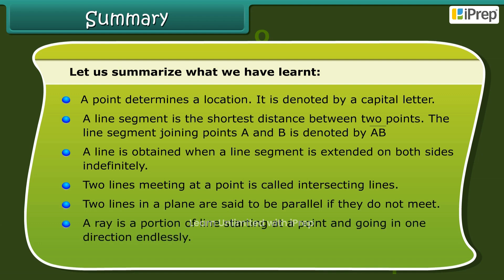A ray is a portion of a line starting at a point and going in one direction endlessly. Two rays starting from a common point form an angle.